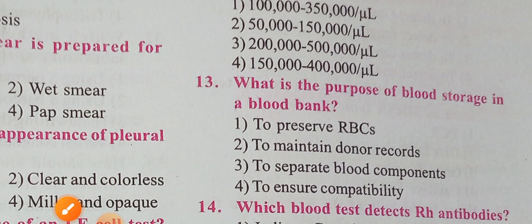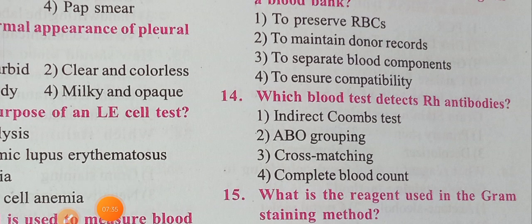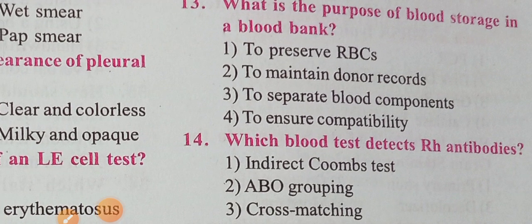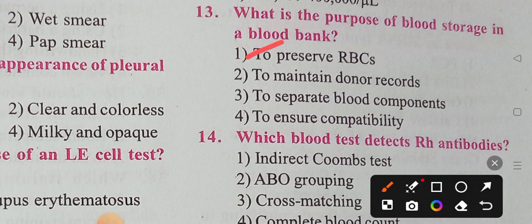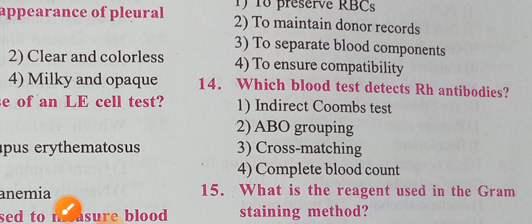Next question: what is the purpose of blood storage in a blood bank? The options are to preserve RBCs, to maintain donor records, to separate blood components, or to ensure compatibility. Option one, to preserve RBCs, is the correct answer. Blood is stored in a blood bank primarily to preserve RBCs.